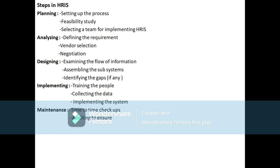Coming to implementing — this means training the people, collecting the data, and implementing the system. Training the people means selecting and training those people in HRIS so that they can easily apply the HRIS system. Afterwards, they collect data from each subsystem and store it. Then they implement it in the system — collecting data manually and implementing it into the HRIS system.